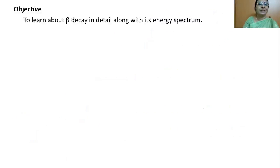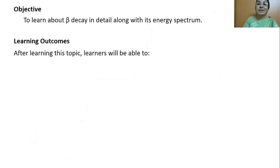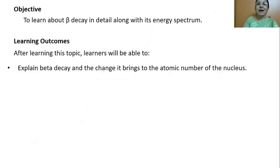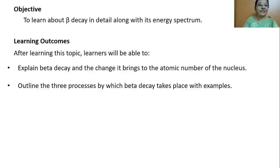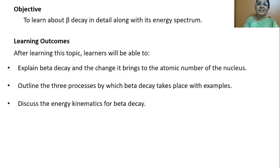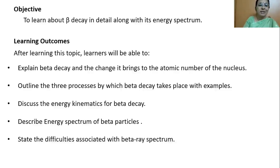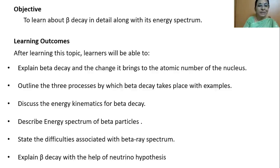The objective of today's lecture is to facilitate learners to learn about beta decay in detail along with its energy spectrum. After listening to this lecture, learners will be able to explain beta decay and the change it brings to the atomic number of the nucleus, outline the three processes by which beta decay takes place with examples, discuss the energy kinematics for beta decay, describe the energy spectrum of beta particles, state the difficulties associated with beta ray spectra, and explain beta decay with the help of the neutrino hypothesis.